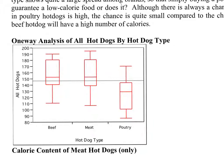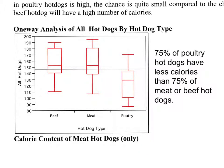We could say that, in conclusion, poultry hot dogs have a greater chance of having less calories than meat or beef hot dogs, mainly because 75% of the poultry hot dogs are going to have less calories than 75% of all the other hot dogs. So in this sense, poultry hot dogs have less of a chance of having more calories.